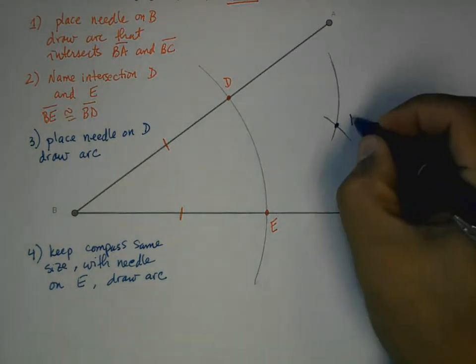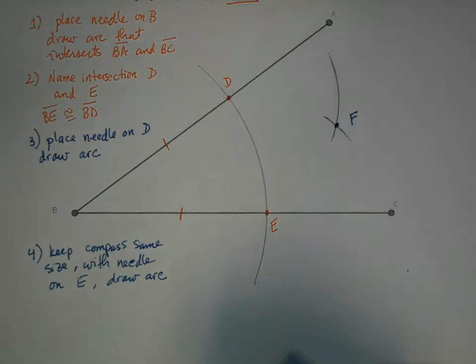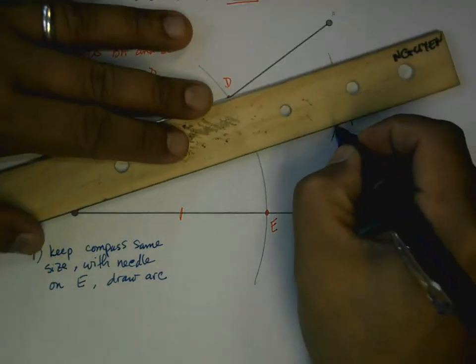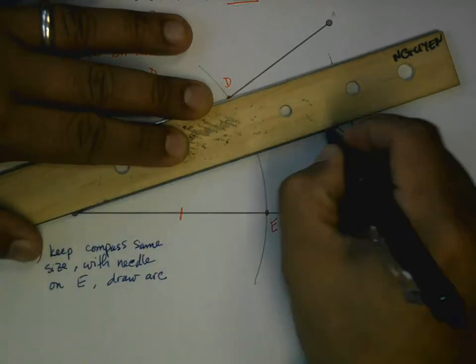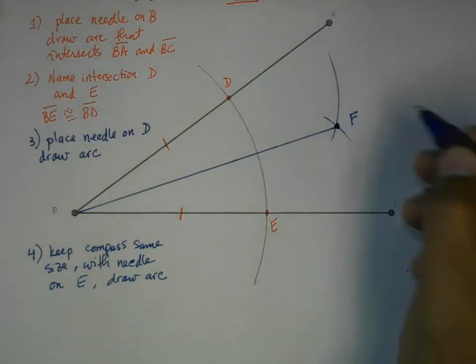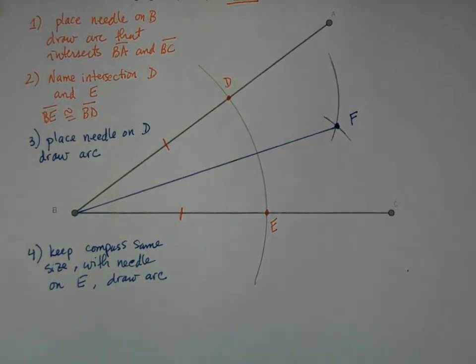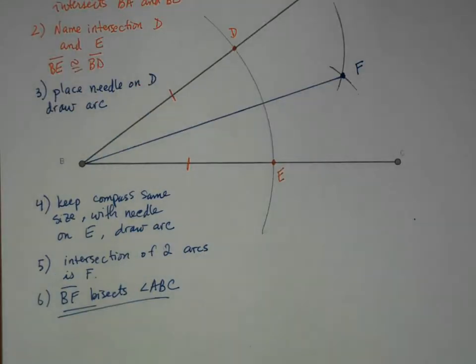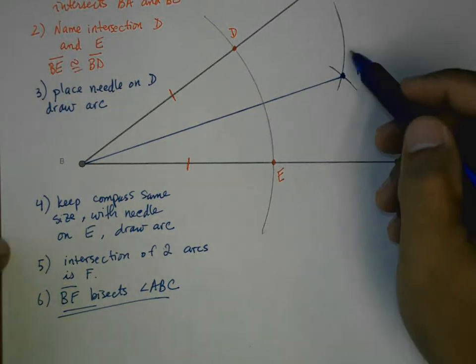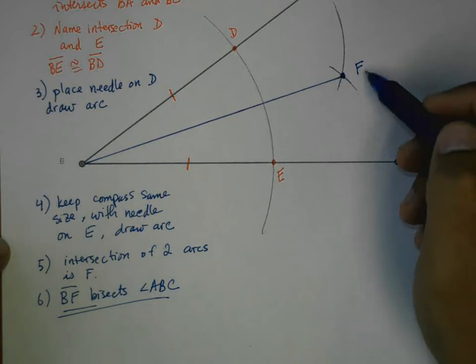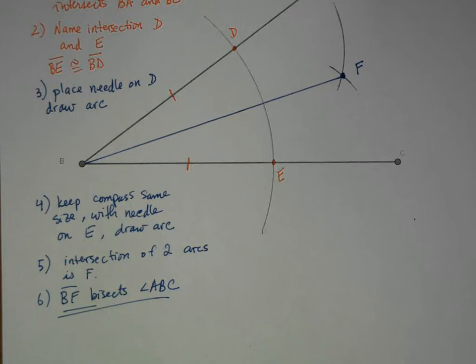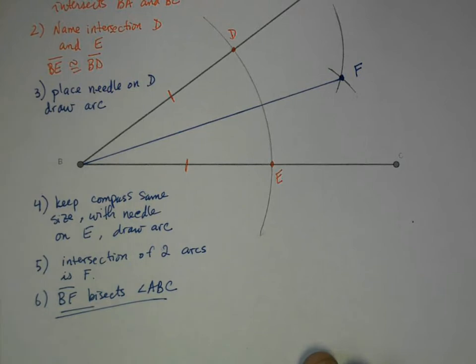Where those arcs intersect, we shall call this point F. Wherever they intersect, call it F. And the claim is that BF is the bisector of angle ABC. So where the two arcs intersect each other, we're going to put a point there, name that point F. And our claim is that BF correctly and precisely bisects angle ABC.